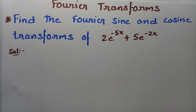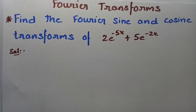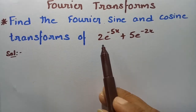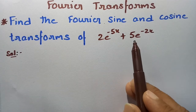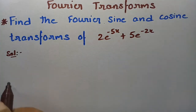Please hear me out for the next few minutes. This video is going to be very meaningful for you, giving the exact solution for the problem on Fourier transforms. We have to find the Fourier sine and cosine transforms of the function 2 into e power minus 5x plus 5 into e power minus 2x.